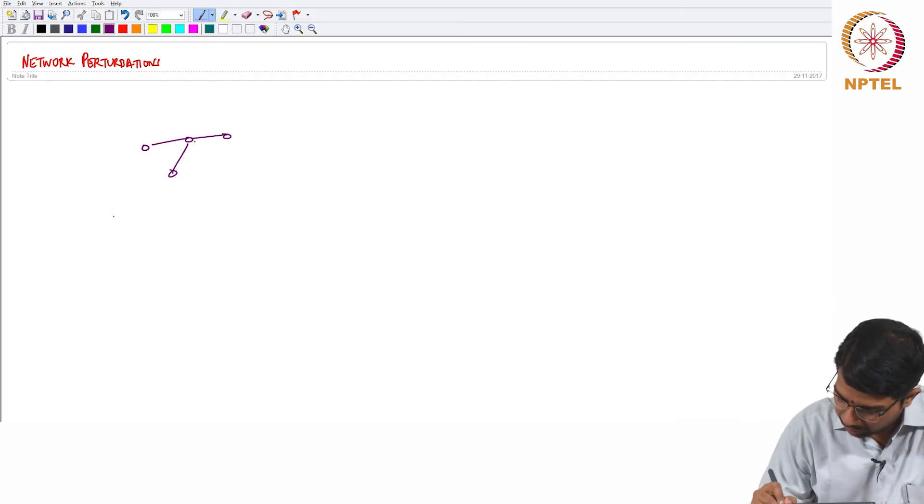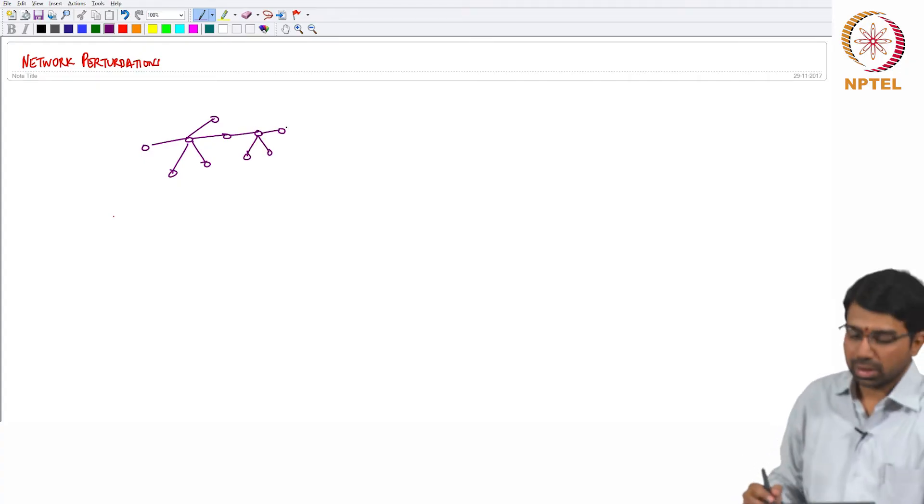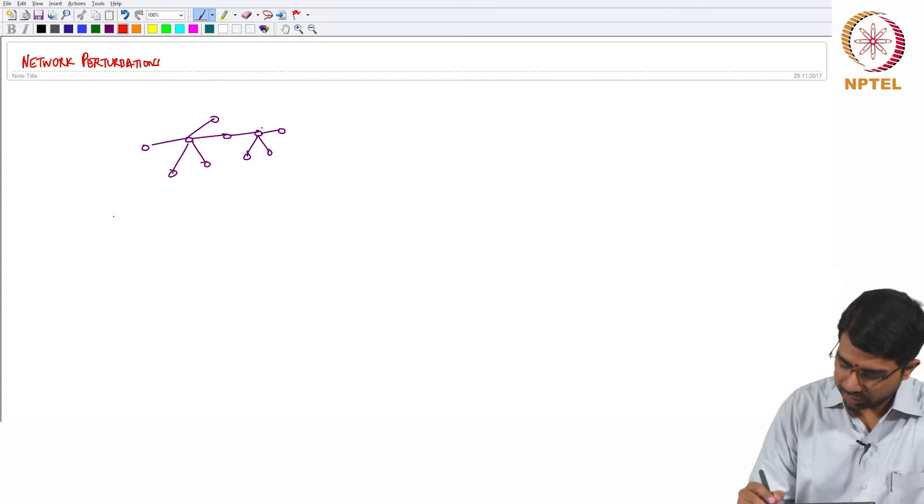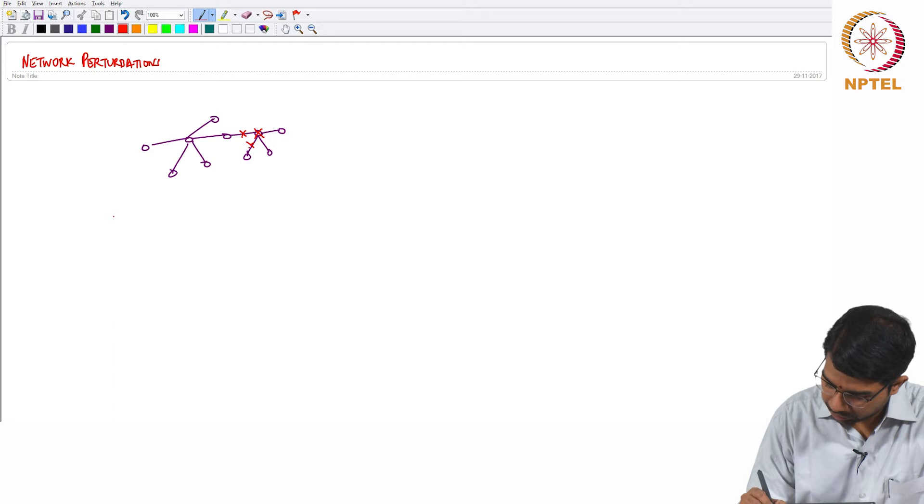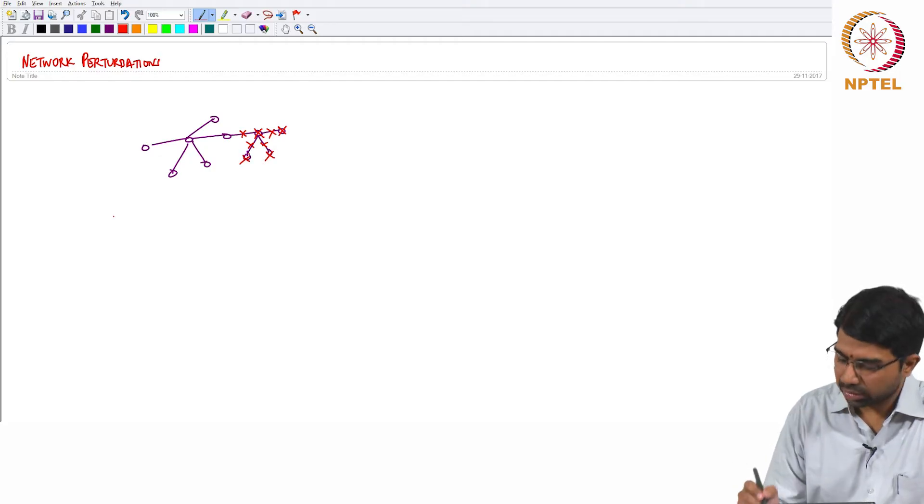You have a network that looks like this. Obviously when you perturb the network, let's say you remove this node, you essentially remove all of these. So these nodes will also go out because they do not have any other connections.